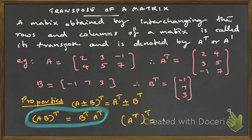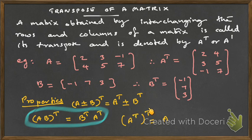The final property: (A^T)^T = A. If you take the transpose and then take the transpose again, you get back to the original A. When you take the rows as columns and then take columns back as rows, nothing happens — two transposes return to the original matrix.